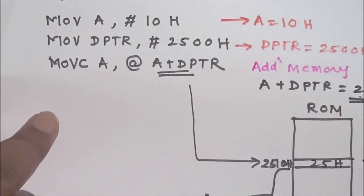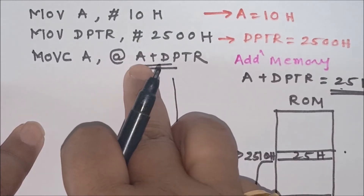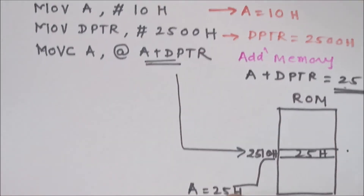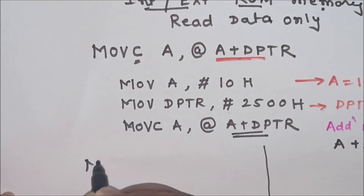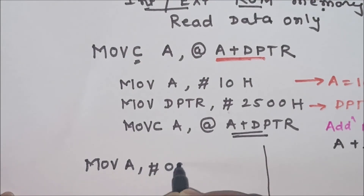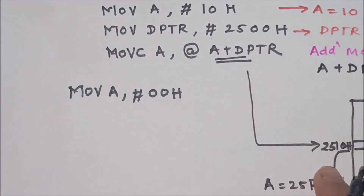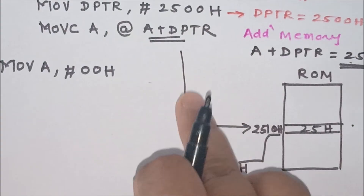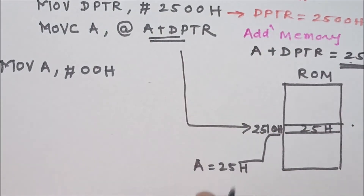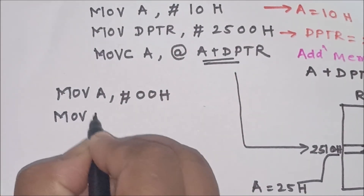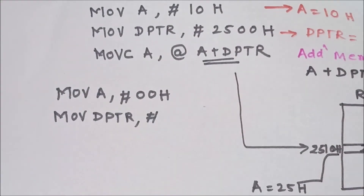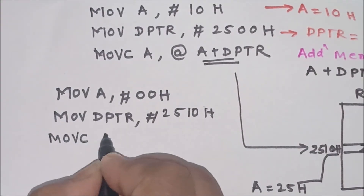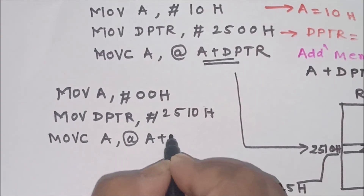We are reading data from ROM memory whose address is computed by adding accumulator contents and DPTR, and the result is stored back into the accumulator. Generally, the accumulator is initialized with 00h and the total address is stored entirely in DPTR. So instead of storing 10h in the accumulator and 2500h in DPTR, the whole address 2510h is stored in DPTR, and then MOVC A, @A+DPTR is written.